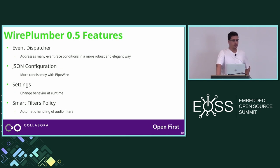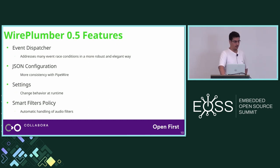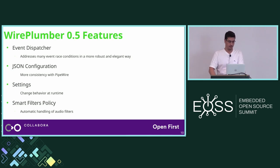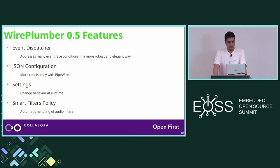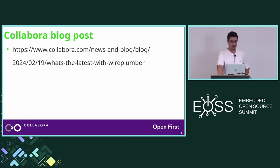Version 0.5 also introduces the concept of settings — users can change settings at runtime without modifying the configuration file and restarting WirePlumber. These settings are useful if a user wants to quickly change WirePlumber's behavior for a short period of time. Finally, and this is what I'm going to focus on in this presentation, it introduces smart filters policy to automatically handle audio filters. There's a blog post by my coworker George with more details about the new features of 0.5 if you want to read further.